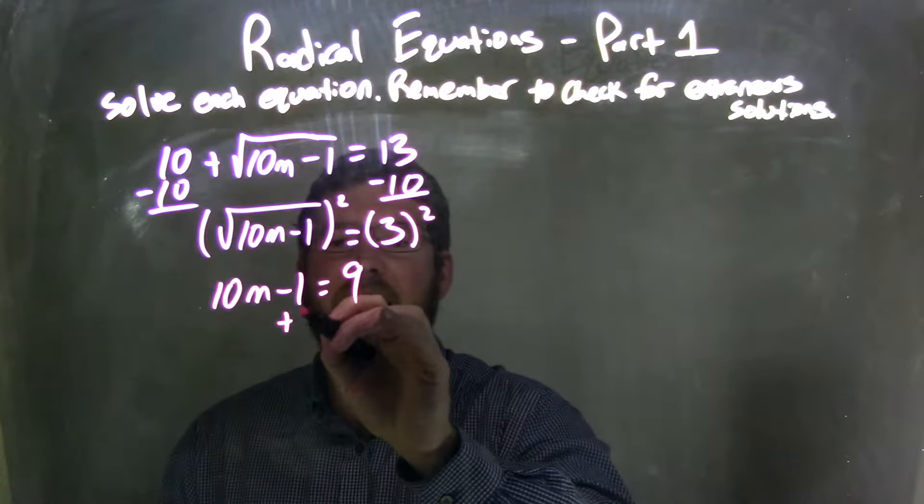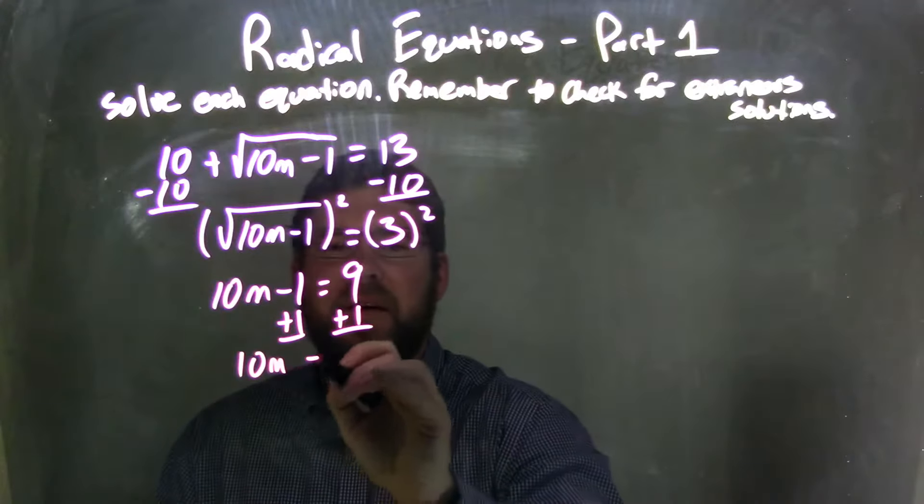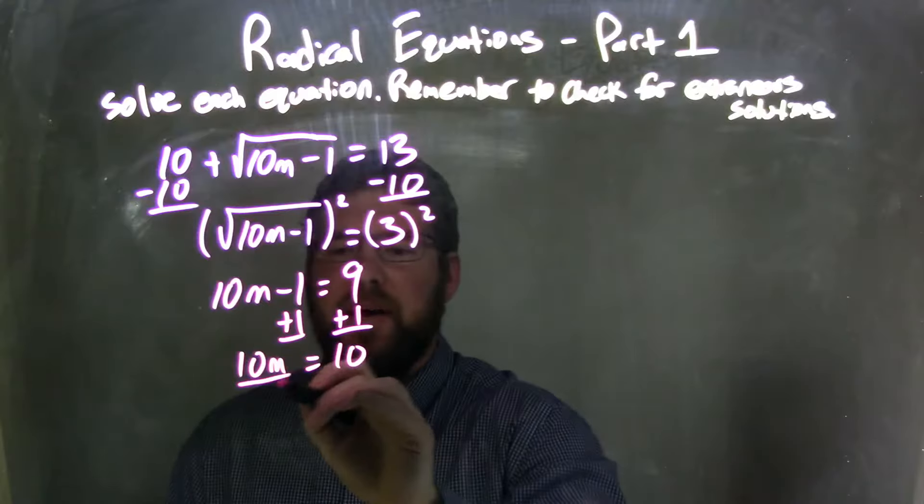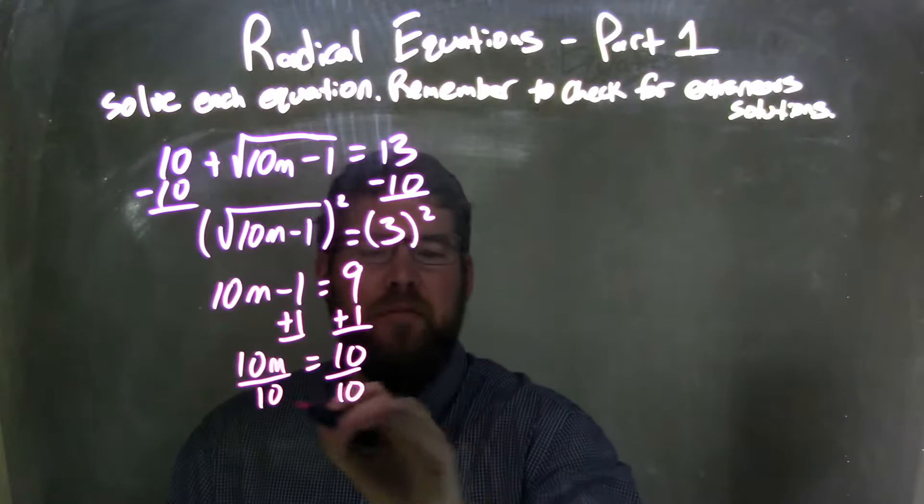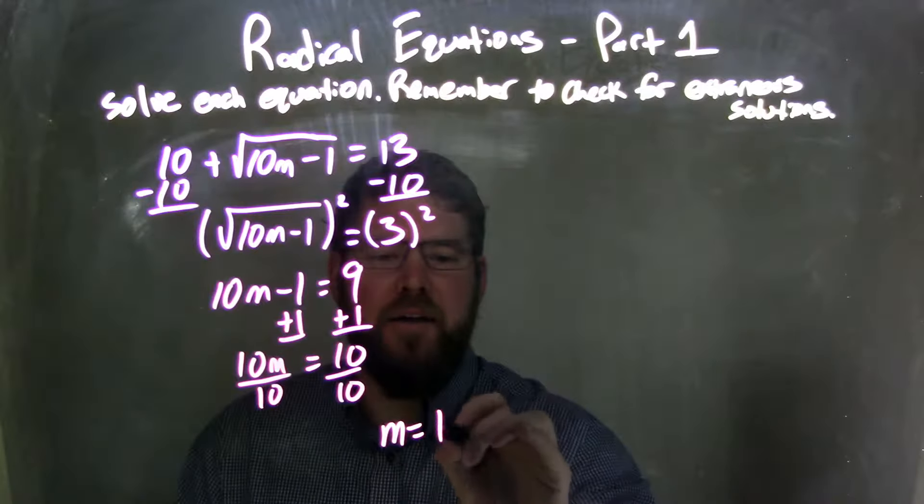And I'm going to add 1 to both sides, leaving me with 10m equals 10. 9 plus 1 is 10. Then I divide by 10, giving me my final answer, which I'll write here as m equals 10 divided by 10, which is 1.